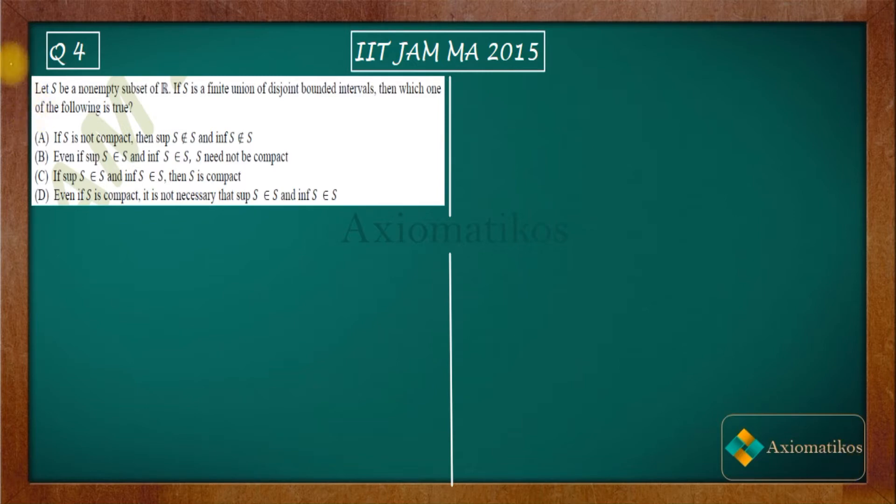Let S be a non-empty subset of R. If S is a finite union of disjoint bounded intervals, then which one of the following is true? Firstly, it is given to you that S is a non-empty subset, and the second most important thing is that it's a finite union of disjoint bounded intervals.